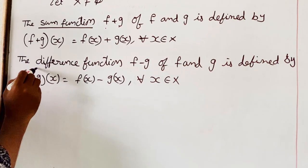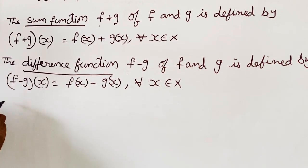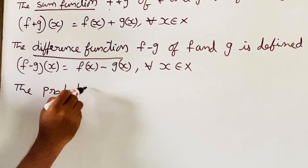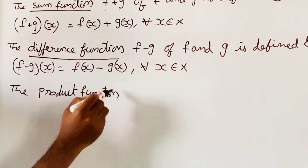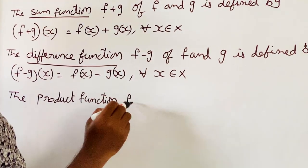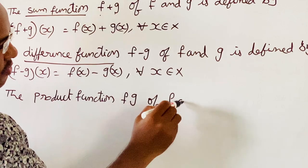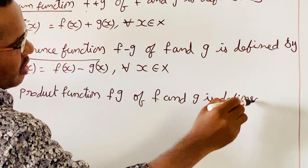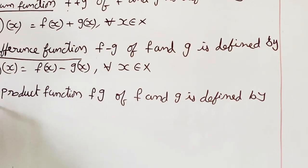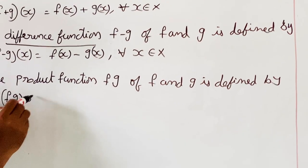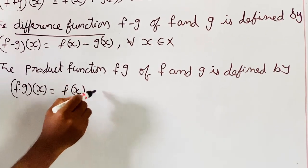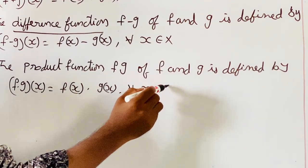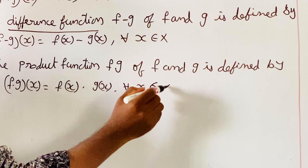Next, the product function: the product function F into G is defined by F into G of X is equal to F of X into G of X, for all X belonging to X.